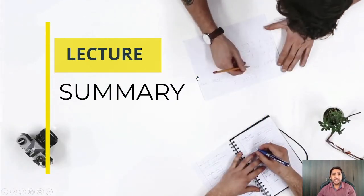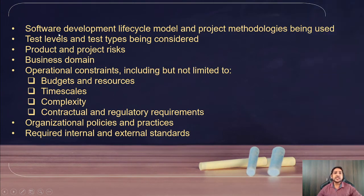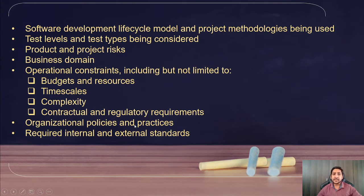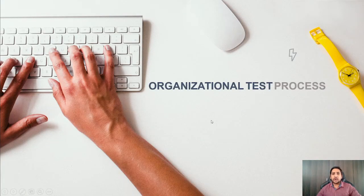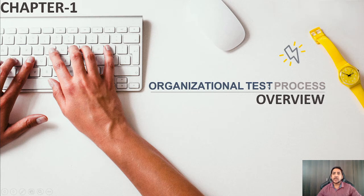To summarize the context factors: (1) software development life cycle model and project methodologies, (2) test levels and test types, (3) product and project risk, (4) business domain, (5) operational constraints including budget, resources, time scale, complexity, and contractual and regulatory requirements, (6) organizational policies and practices, (7) required internal and external standards. These are the factors based on which we select the test process.